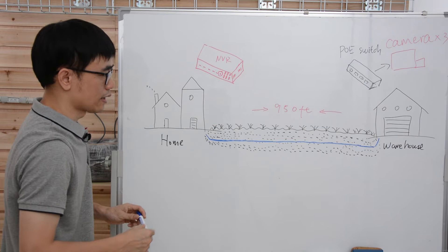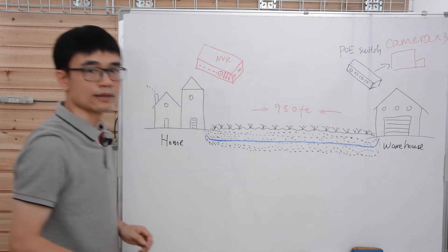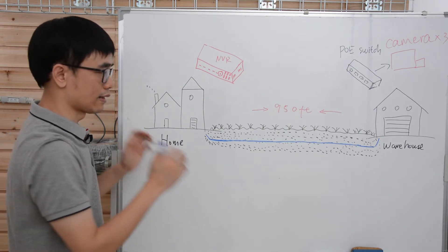Actually, there's another solution. He can have the 1,000 continuous run between the home and the warehouse, but he needs different equipment. Now let's move to the workshop and see how we can get his system up.